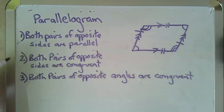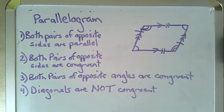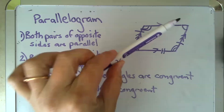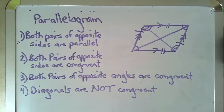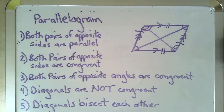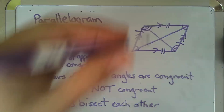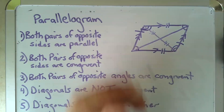The diagonals of a parallelogram are not necessarily congruent. You can see from the picture here that this diagonal is definitely longer than this diagonal. Now, if your parallelogram happens to be a rhombus or a square, then that changes — then your diagonals are congruent. But for just a parallelogram, we do not know the diagonals are congruent, but we do know that the diagonals of a parallelogram bisect each other, which means those segments are congruent and those are congruent.